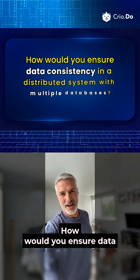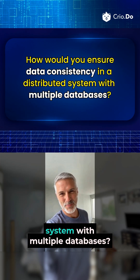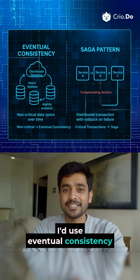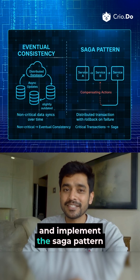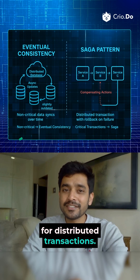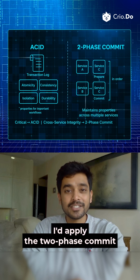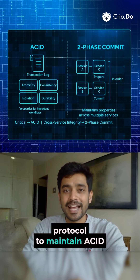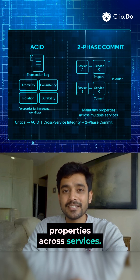How would you ensure data consistency in a distributed system with multiple databases? I'd use eventual consistency for non-critical data and implement the saga pattern for distributed transactions. For critical operations, I'd apply the two-phase commit protocol to maintain ACID properties across services.